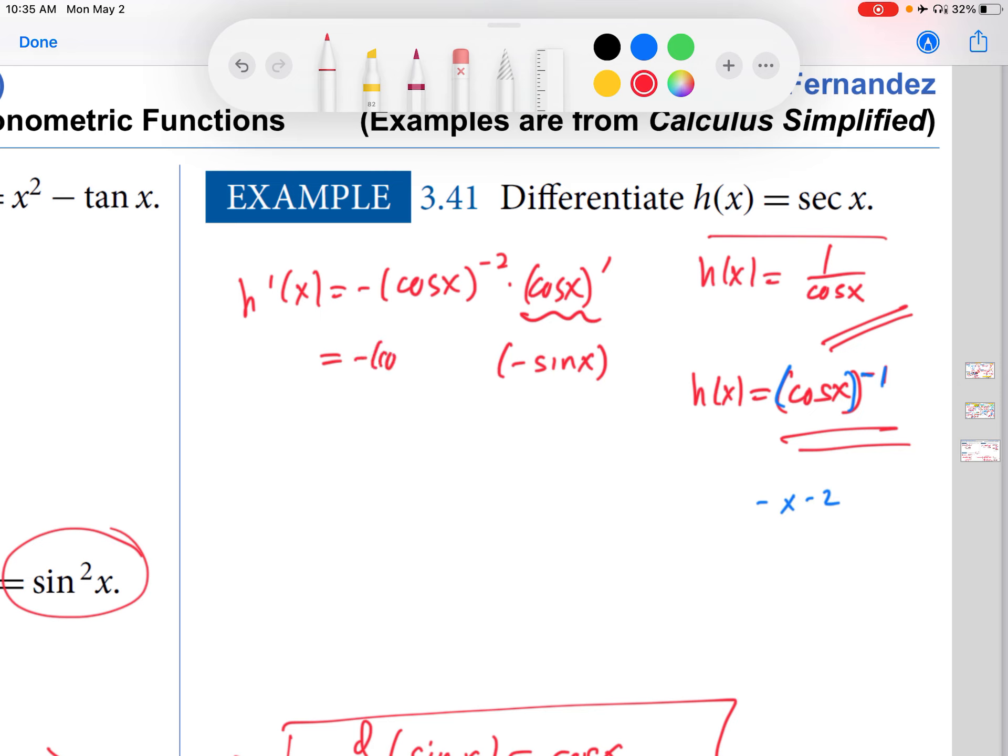All right, and that part we did talk about, that is minus sine x. Okay, so I get minus cosine of x to the minus 2 times minus sine x. And then what does that give me in the end? Well, let's just work it out.